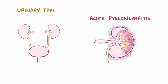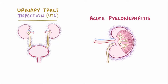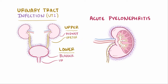A urinary tract infection, or UTI, is any infection of the urinary tract, which includes the upper portion of the tract — the kidneys and the ureters — and the lower portion of the tract — the bladder and the urethra. So acute pyelonephritis is a type of upper urinary tract infection.